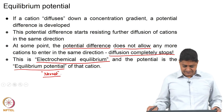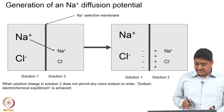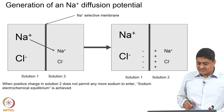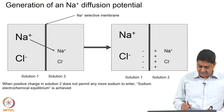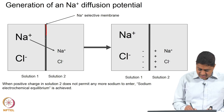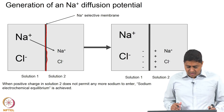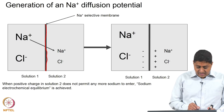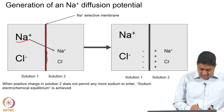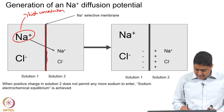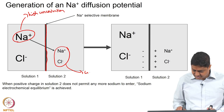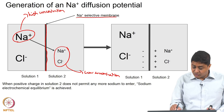What is achieved at this state is an electrochemical equilibrium, and the potential at which it is achieved is called the equilibrium potential of that cation, also called the Nernst potential of that cation. We will discuss that in the next class. Let us consider the case of sodium and discuss how diffusion potential is generated in the case of sodium.